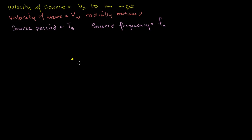So let's think about what's going to happen. At time equals 0, the source emits that first crest — that first pulse. Now let's fast forward T sub s seconds. Every T sub s seconds, it emits a new pulse. Where is that first pulse after T sub s seconds? You multiply the velocity of that first pulse times the time. Velocity times time gives you distance — for example, 5 meters per second times 2 seconds gives 10 meters.